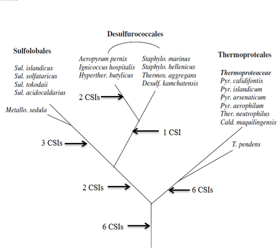Additionally, a number of CSIs were found that are specific for different orders of Crenarchaeota — three CSIs for Sulfolobales, five CSIs for Thermoproteales, and two CSIs common for Sulfolobales and Desulfurococcales. The signatures described provide novel means for distinguishing Crenarchaeota and Thaumarchaeota, and additionally they could be used as a tool for the classification and identification of related species.